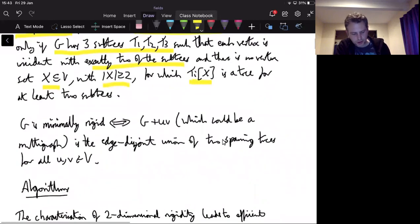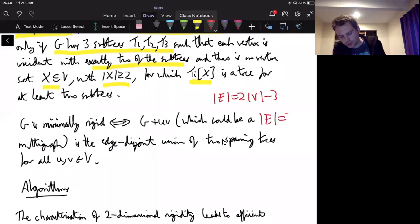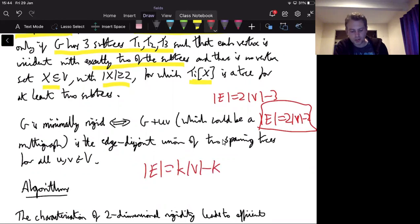And the second version is to notice that e equals 2v minus 3 is very close to e equals 2v minus 2, and there's famous combinatorial results of Tutte and Nash-Williams, which tell us about graphs where, in general, graphs where e is kv minus k as being graphs that decompose into k edge disjoint spanning trees. I'm going to move this in case it means people can't see the corners.